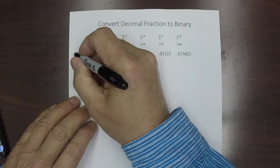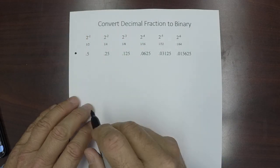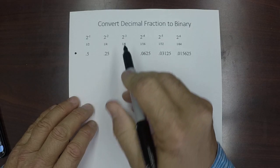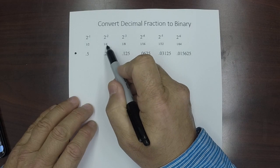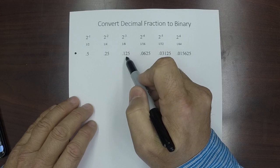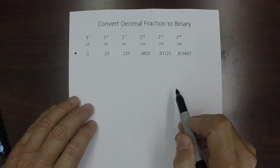To the right of the decimal place, and we'll put the decimal place right there, the first position is worth 2 to the minus 1, 1 half or 0.5. The next one is worth 2 to the minus 2, 1 quarter or 0.25. The third, 2 to the minus 3rd, 1 eighth or 0.125, and it just keeps going on out.